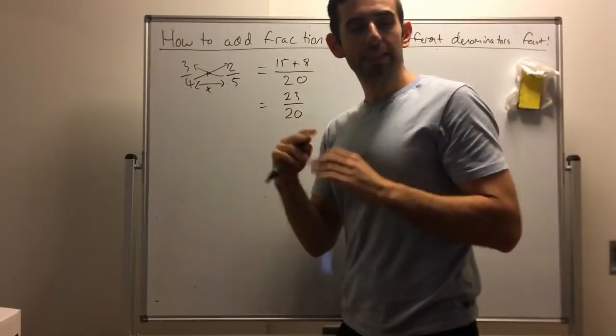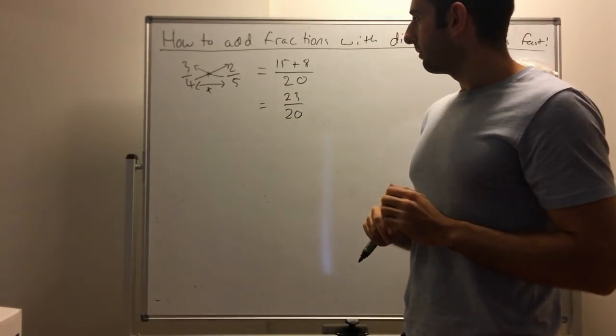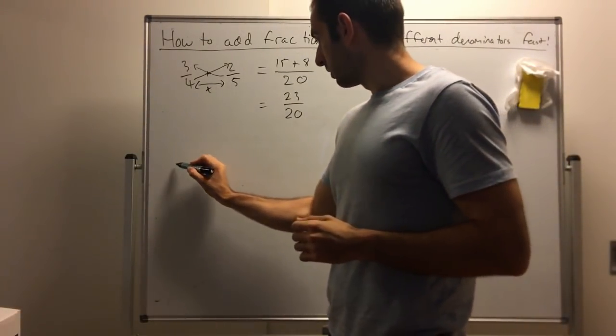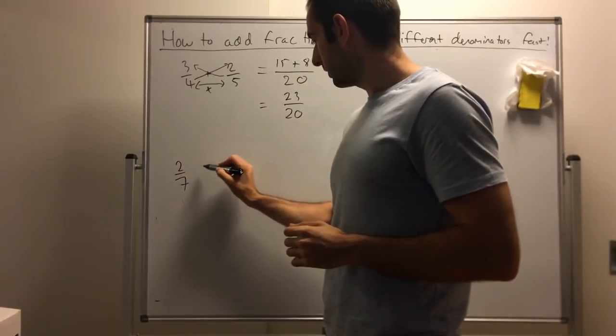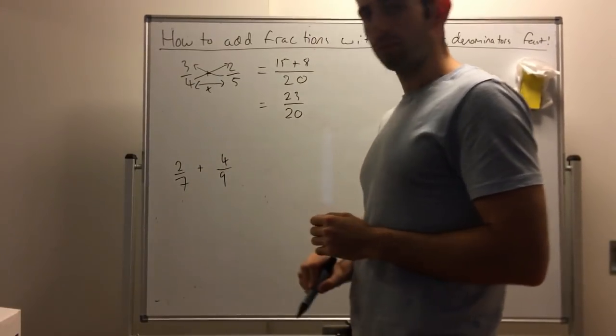For now, we'll leave it as an improper fraction, but you can convert that to a mixed numeral if you want. Let's look at another example: 2 on 7, plus 4 on 9.